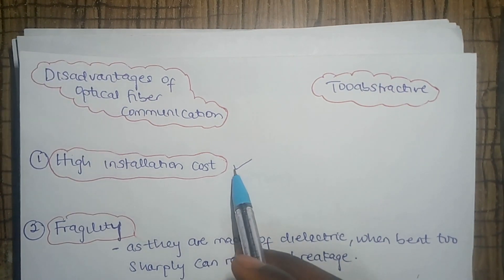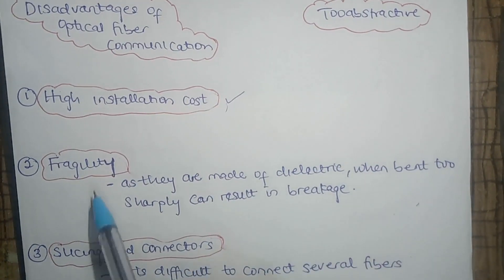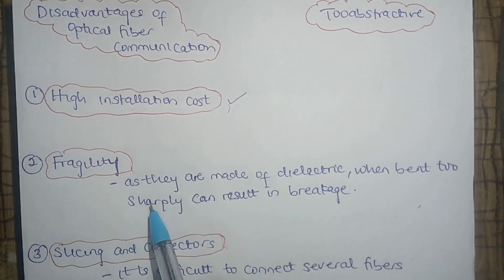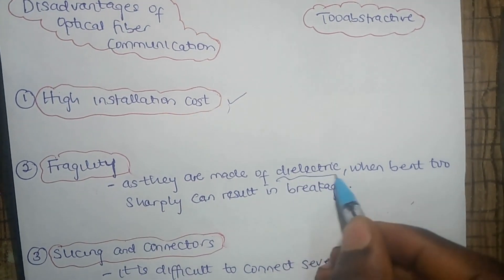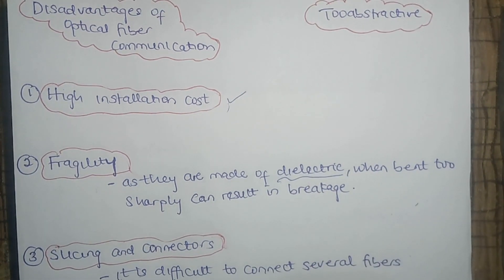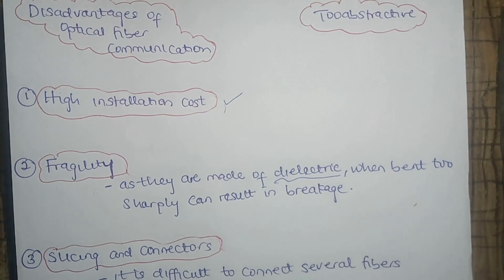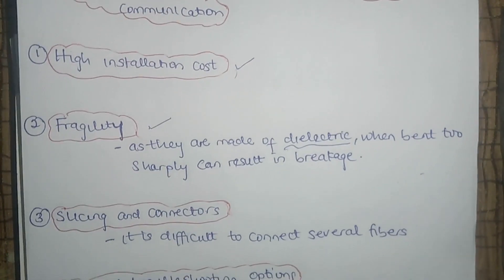The second disadvantage is fragility. As we know, optical fibers are made out of dielectric materials such as plastic or glass. So when you bend them too sharply, it can result in the breakage of the optical fiber. That's another disadvantage.